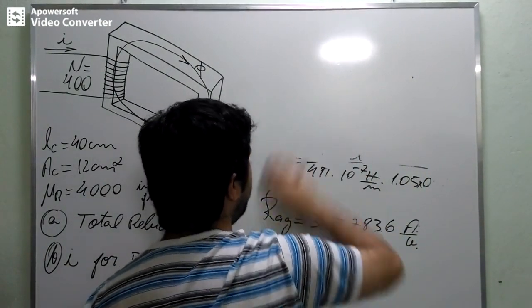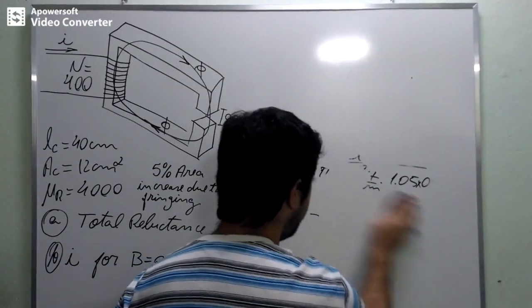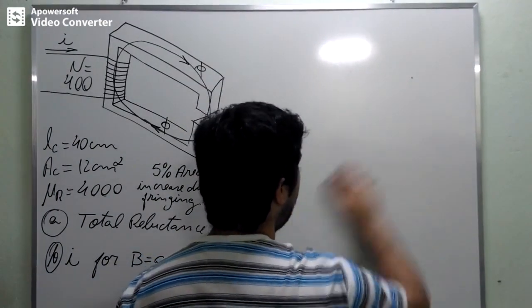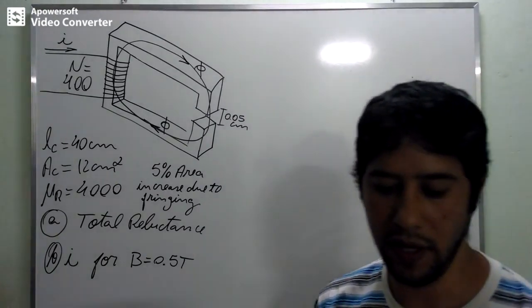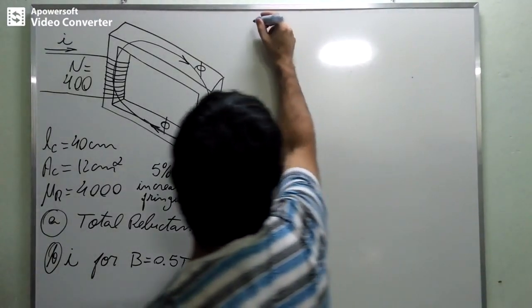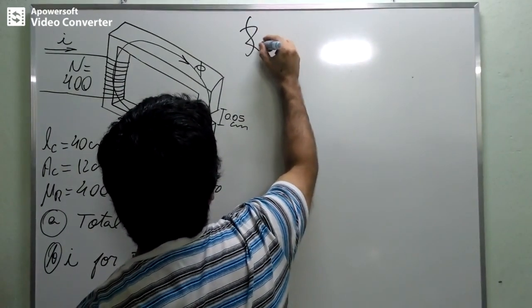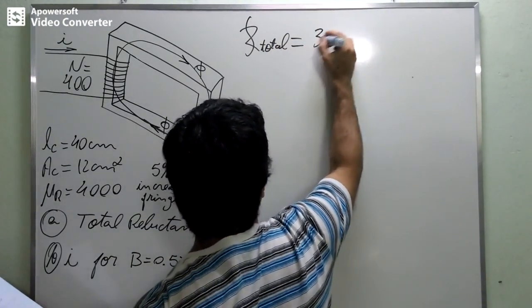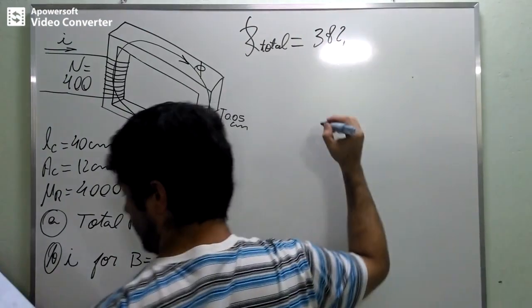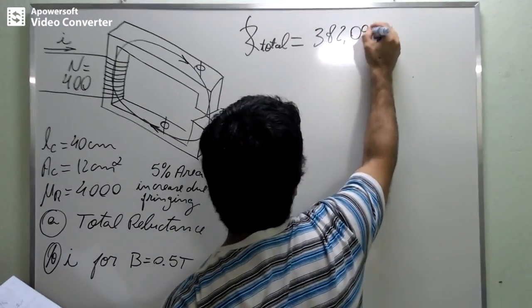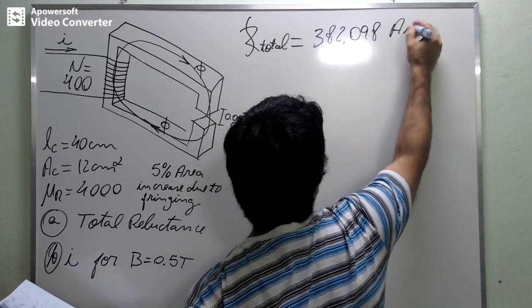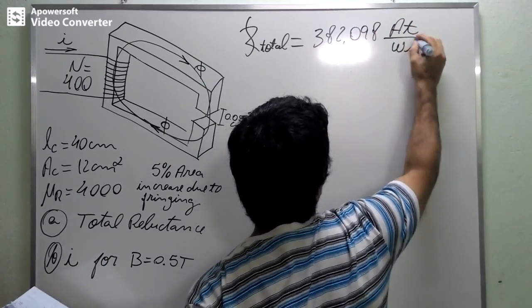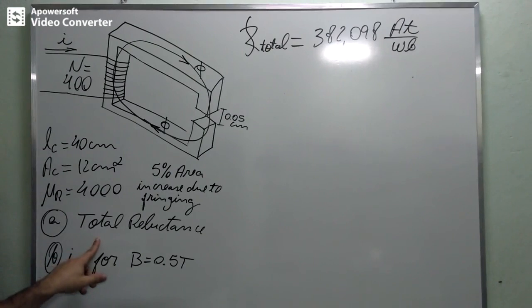The total reluctance will be the sum between these two numbers, the sum of these two results. And this is going to be equal to this number here. We already did it. And we can find that the total reluctance is 382,098 ampere turns per Weber. This is the total reluctance, the response of letter A.